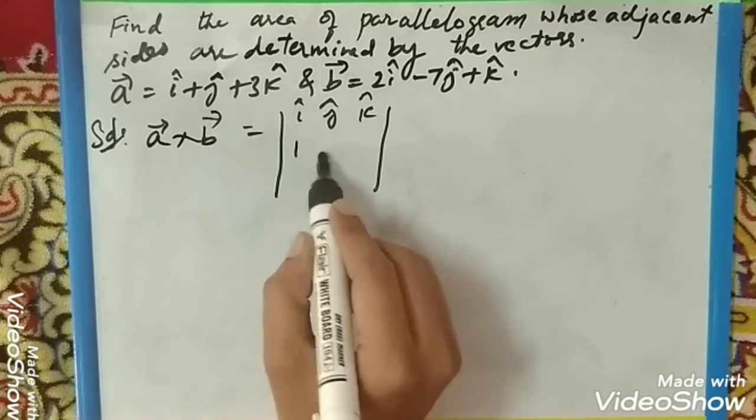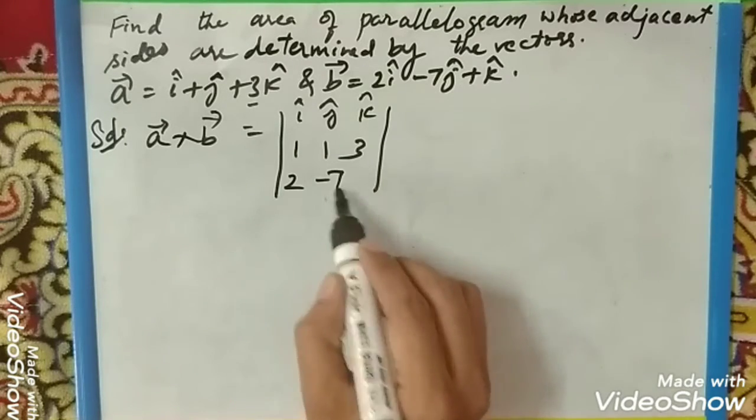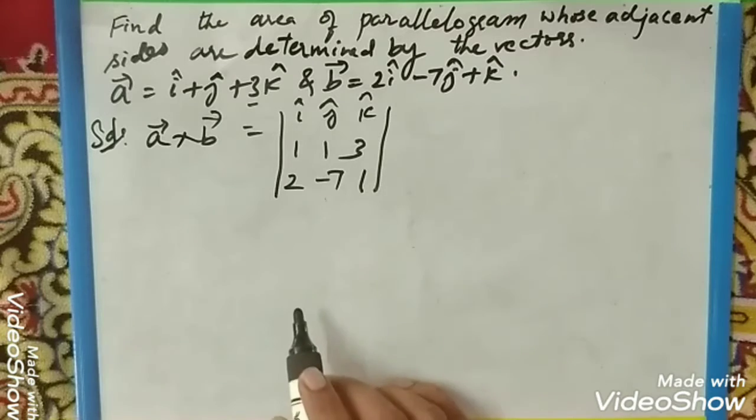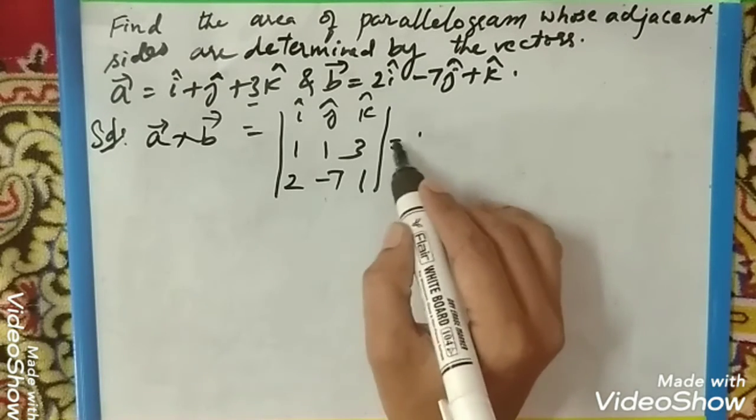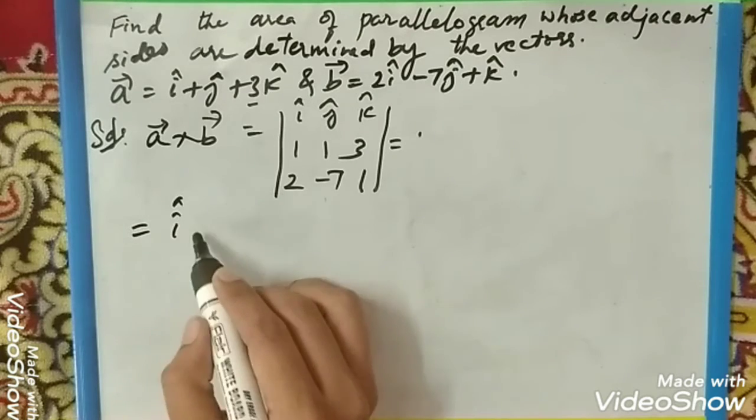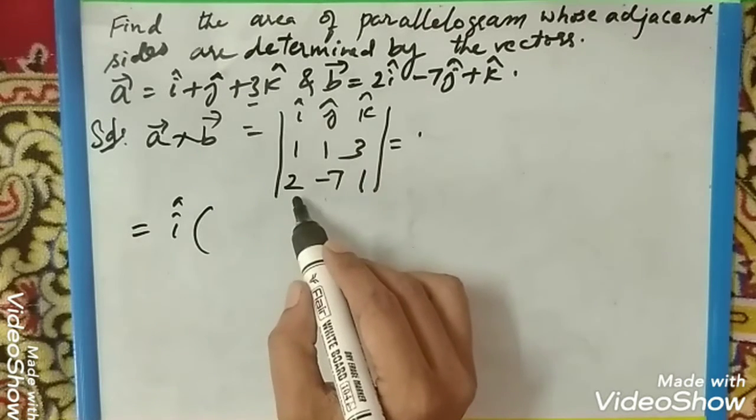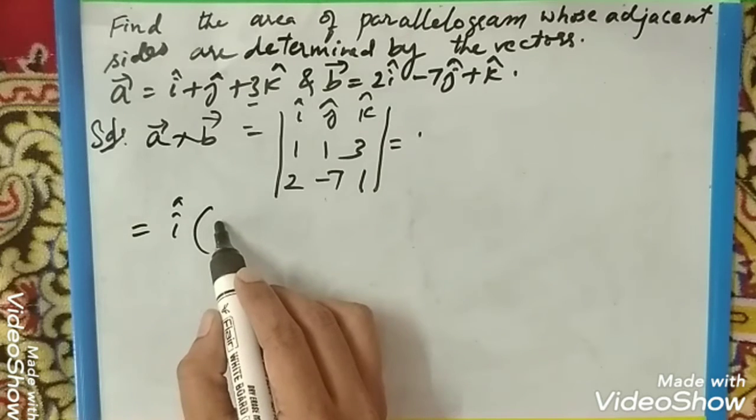The values are 1, 1, and 3, and b vector is 2, -7, and 1. Now to find the values, let's see - to find the value of i you have to take the determinant. This will be cancelled, this will be cancelled, 1, 1 is 1.